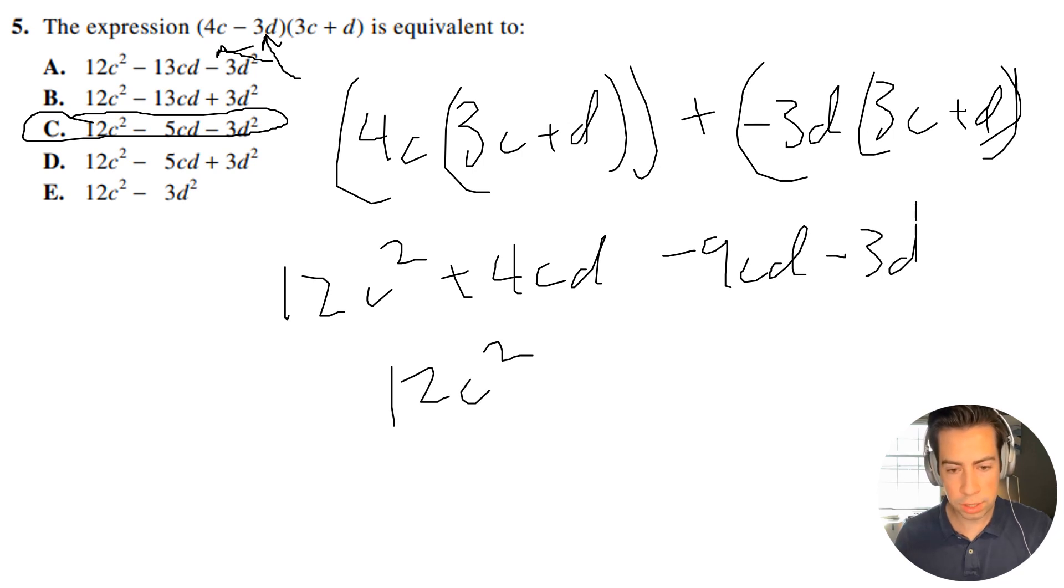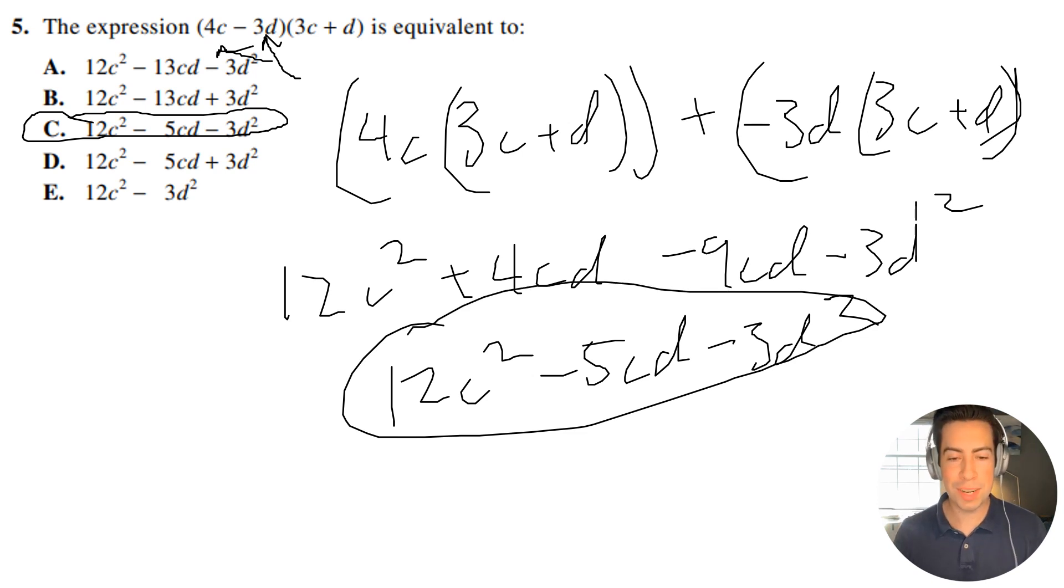And we're going to get 12c squared minus 5cd minus 3d squared. Sorry, this should be squared. All right guys, so that's actually the exact same value, just like I stated before, and if you have any questions, feel free to comment below, and I'll see you in the next video.